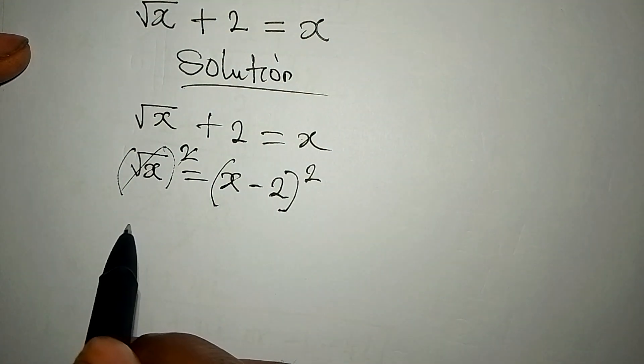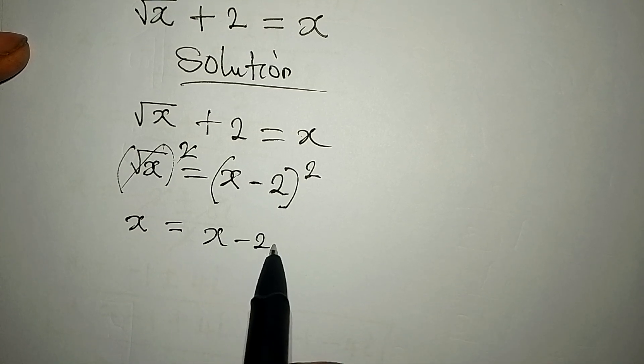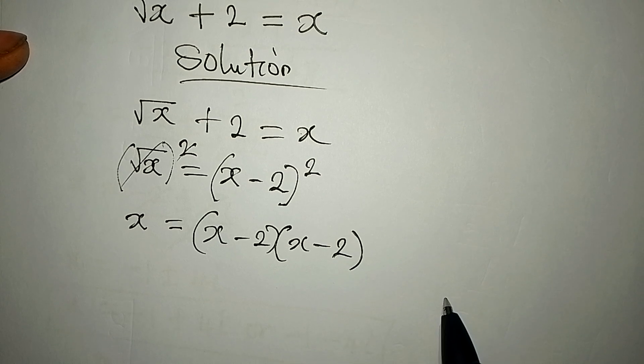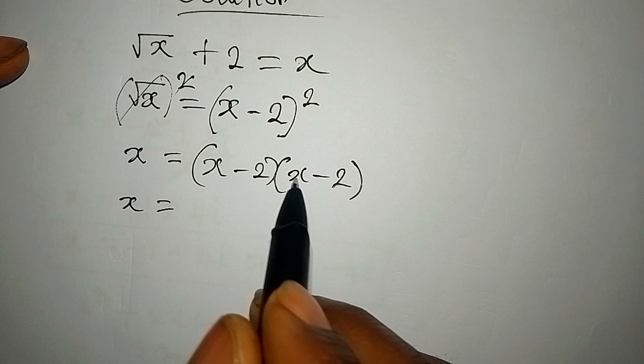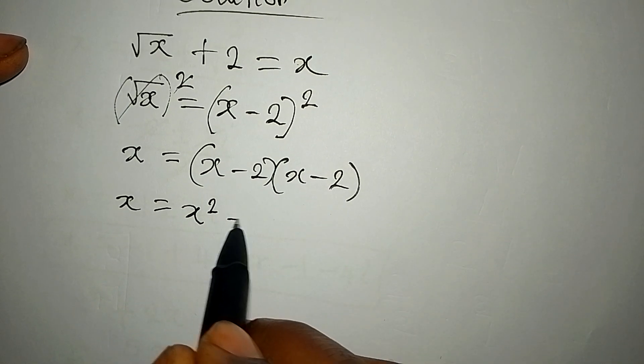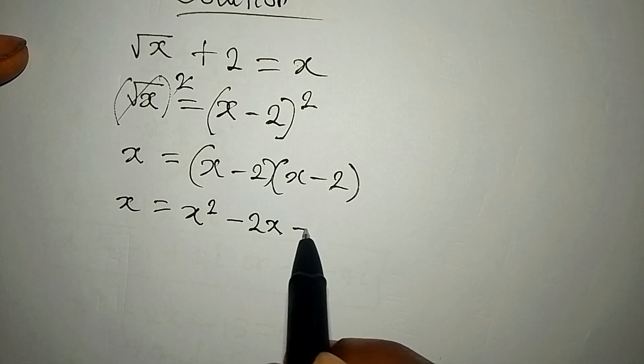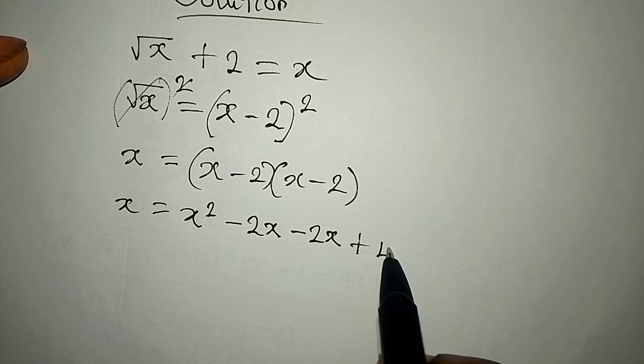This is going to go with this and x is alone and it's equal to x minus 2 in two places. Now if this is the case then x will be equal to x times x is x squared, x times minus 2 is minus 2x, and then minus 2 times x is minus 2x. Then minus 2 times minus 2 is plus 4.